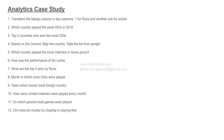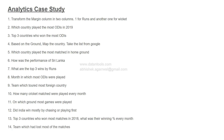Question twelve is: did India win mostly by chasing or by playing first? You have the two team columns and need to work through them to figure out what strategy has gone in India's favor — chasing versus batting first — which gives a trend that leans into data science thinking. Question thirteen is: top three countries who won the most matches in 2018 and what was their winning percentage every month — two different visualizations needed. Question fourteen is: which team had the most lost matches — the team whose performance was really down.